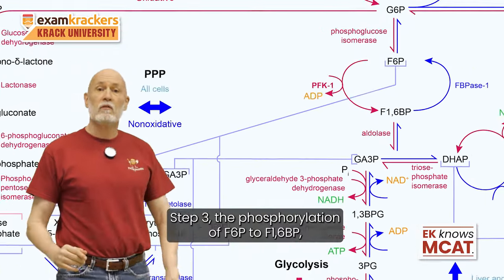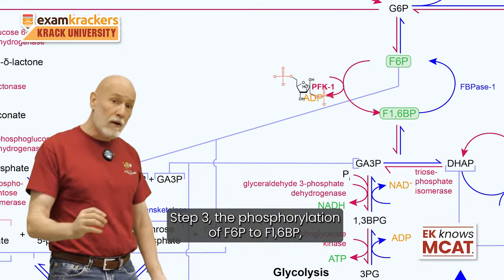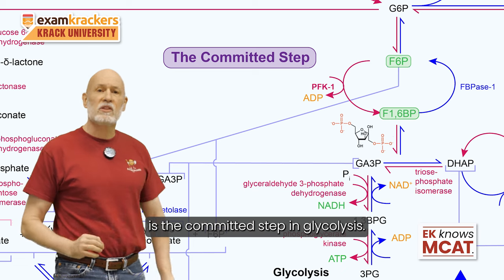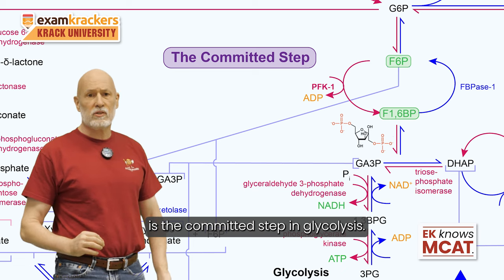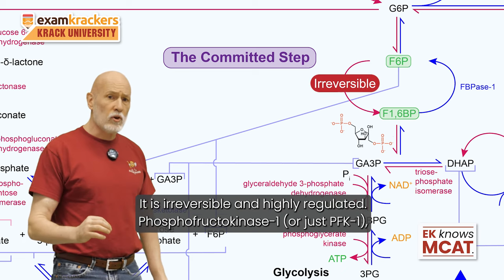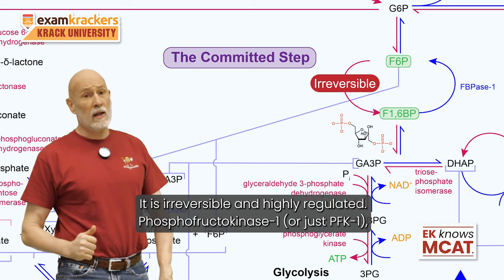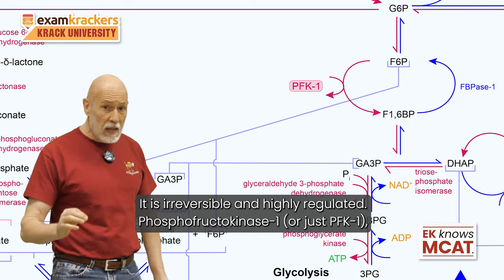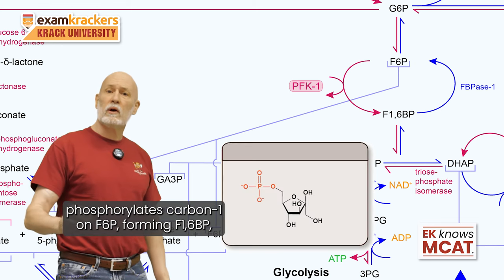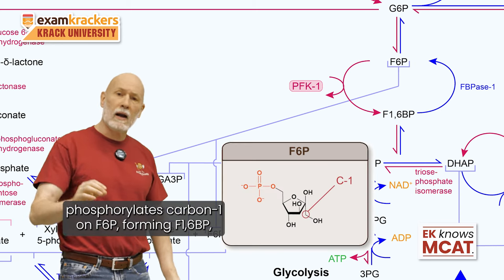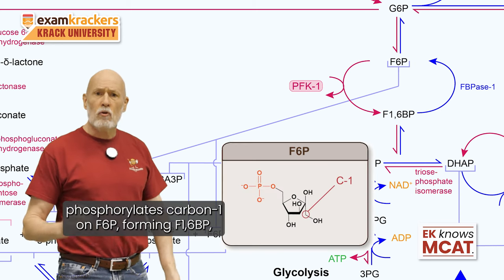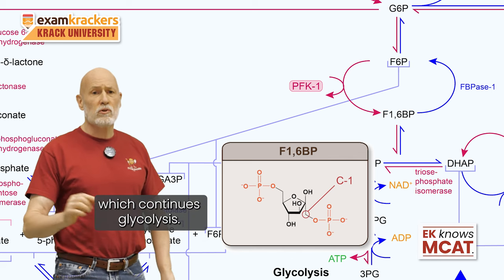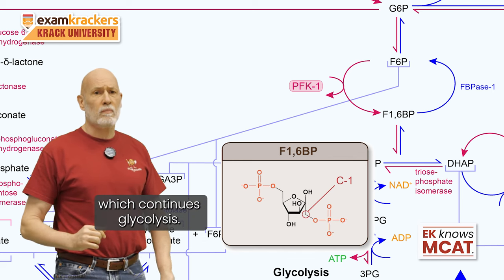Step 3, the phosphorylation of F6P to F16BP, is the committed step in glycolysis. It is irreversible and highly regulated. Phosphofructokinase 1, or PFK1, phosphorylates carbon 1 on F6P, forming F16BP, which continues glycolysis.